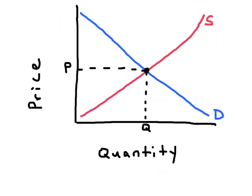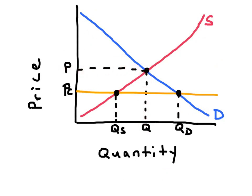Here we have a market in equilibrium. Supply meets demand at equilibrium P and Q. This is what it looks like when we add a price ceiling in a market. The ceiling is below the equilibrium, and this leads to the quantity demanded exceeding the quantity supplied, so we'll have a shortage.